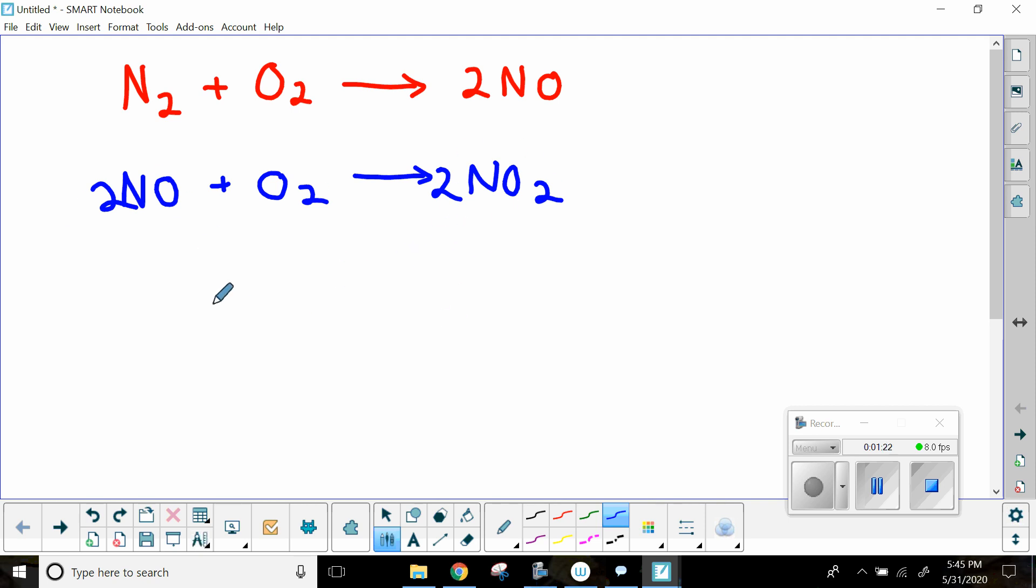What can happen with that is the nitrogen dioxide, the NO2, can react with water in our atmosphere, especially when it's raining, to make two things. This is the part where you don't need to know the specifics, but the two things that can happen here is you can get HNO2 and you can get HNO3.